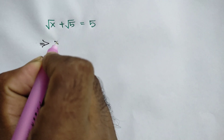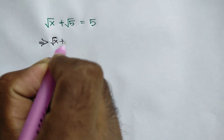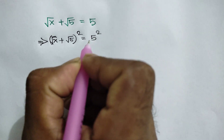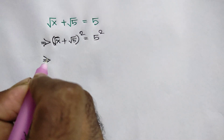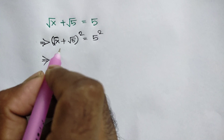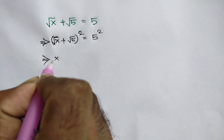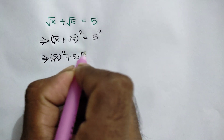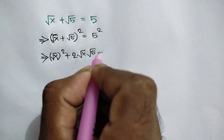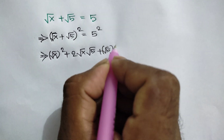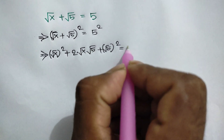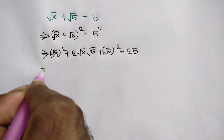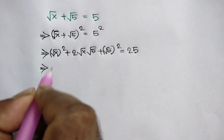Squaring both sides, we can write: square root of x plus square root of 5, whole square, is equal to 5 squared. Now we can use the algebraic formula, so we can write: square root of x, whole square, plus 2 times square root of x times square root of 5, plus square root of 5, whole square, is equal to 5 squared, that means 25.